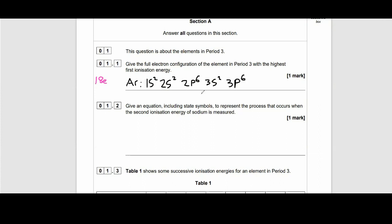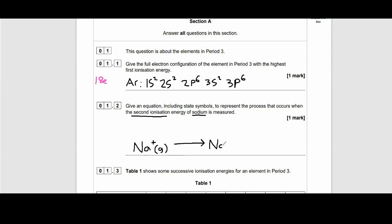Let's look at question 1.2. The question asks us to give an equation including state symbols to represent the process that occurs when the second ionization energy of sodium is measured. We want to start with Na⁺ because it's already lost an electron with the first ionization energy. Then we want it to go to Na²⁺, showing the electron that's been removed. Remember, the species are in a gaseous state when measuring ionization energy.